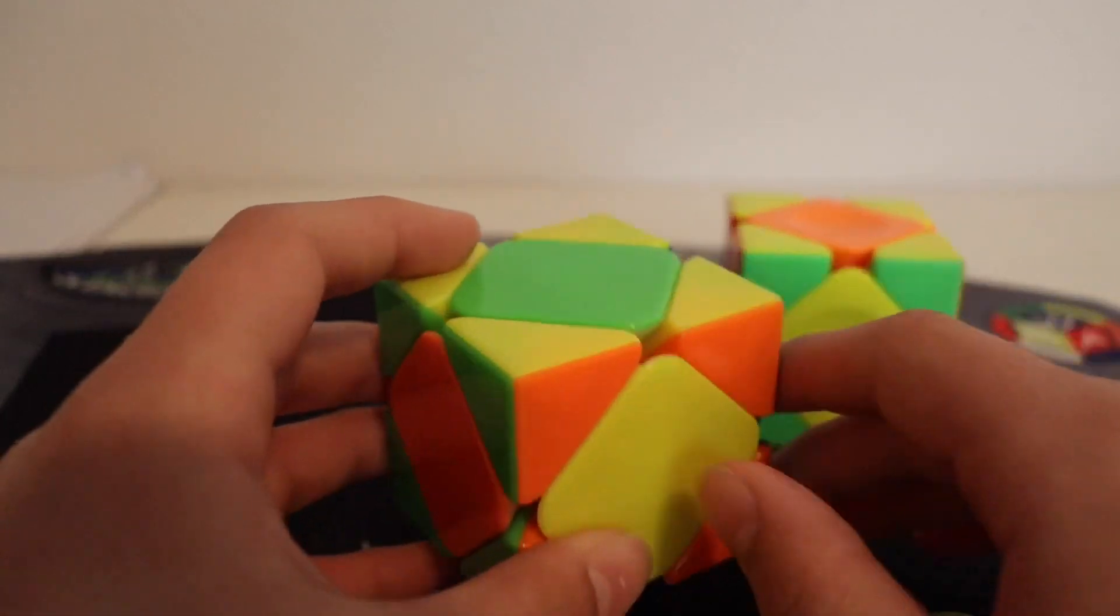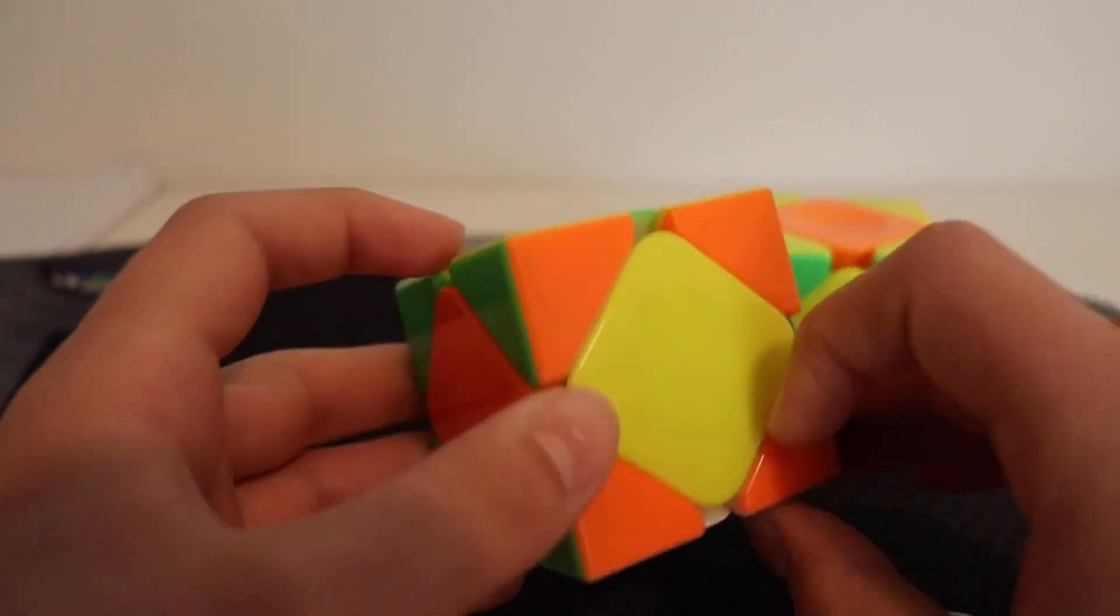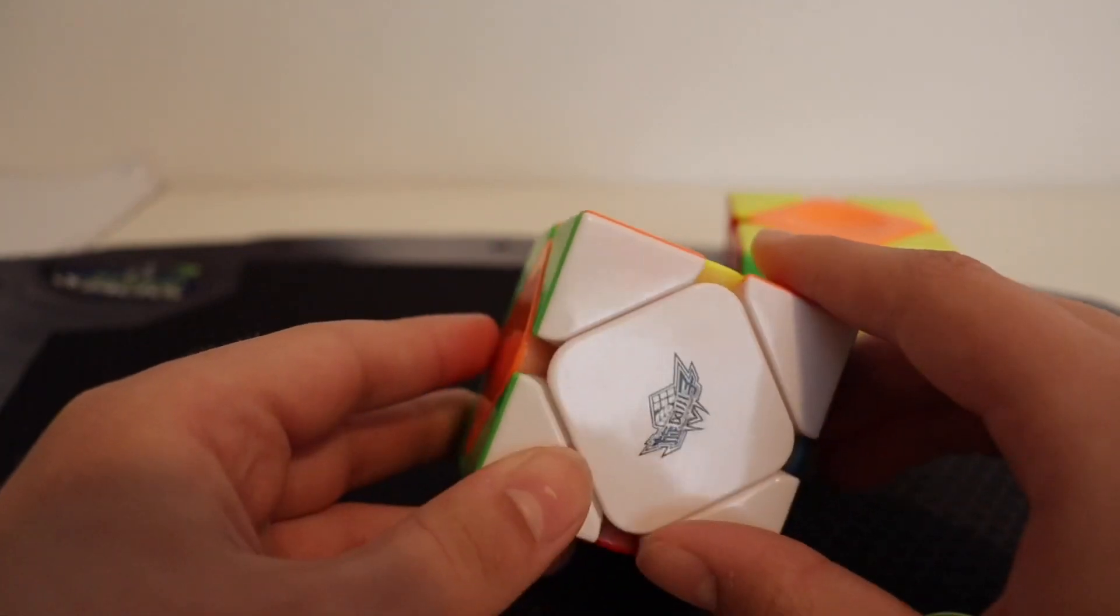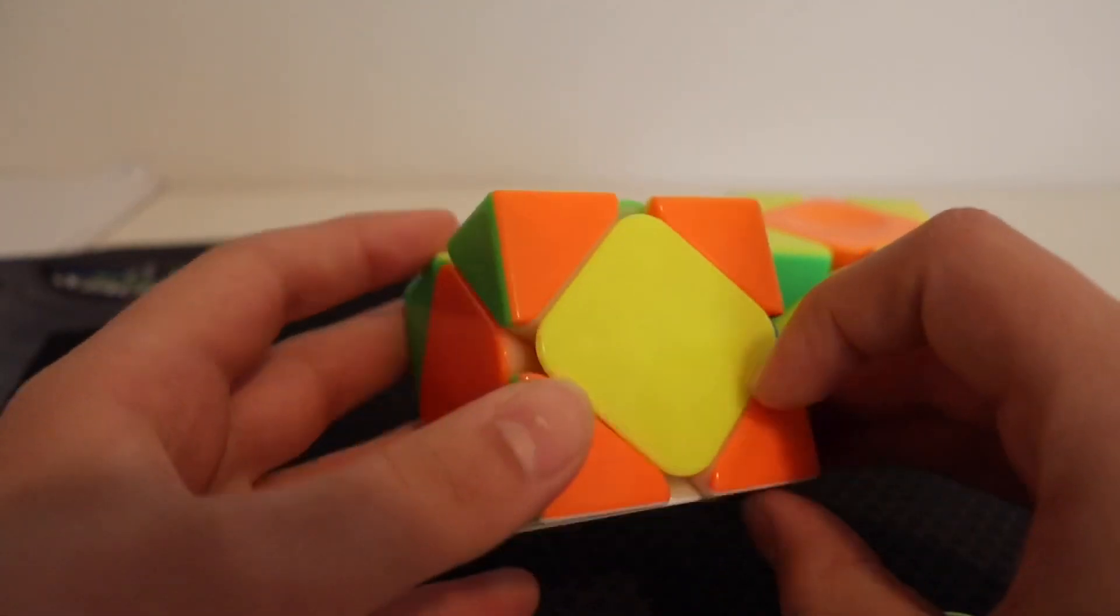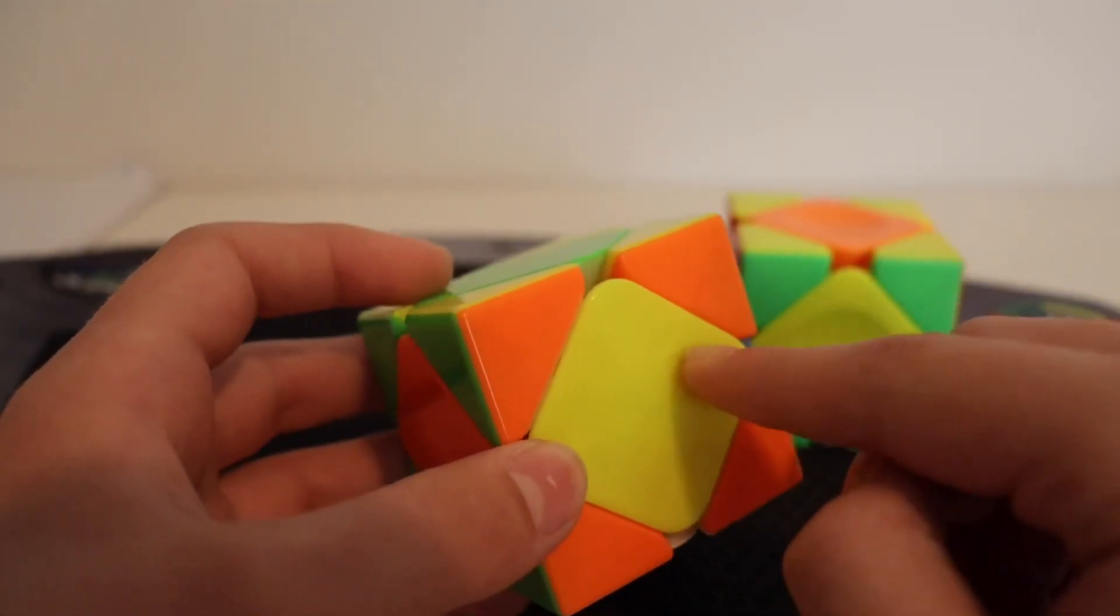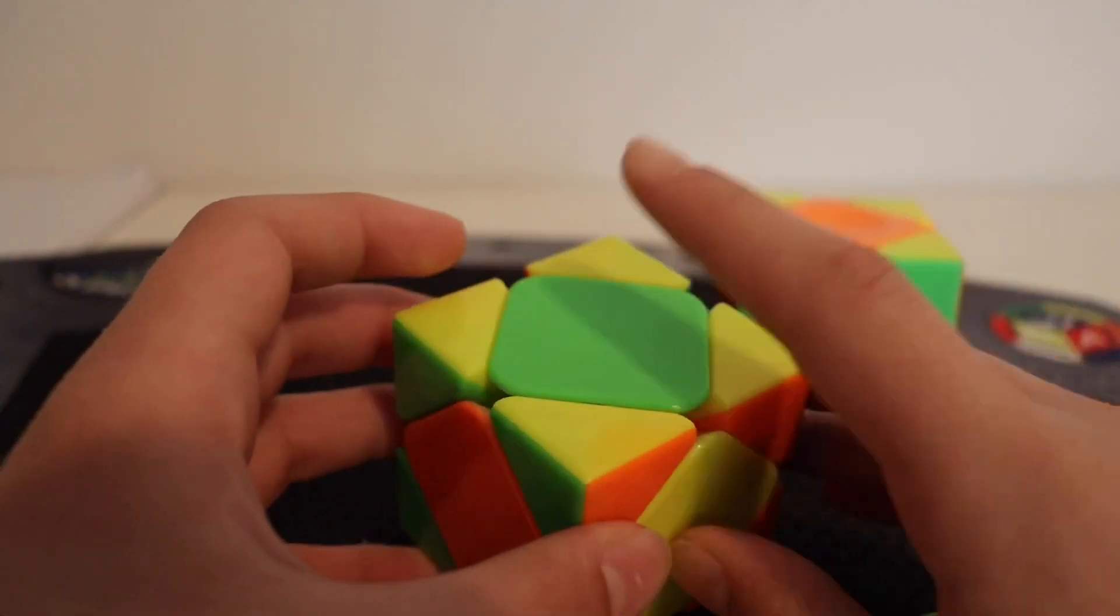Instead of trying to just, you know, recognize it like that, what you can do is, whatever layer you built, like for example, if I built the white layer like I did here, then I'll be looking at the yellow center, or the opposite center that should be on top.